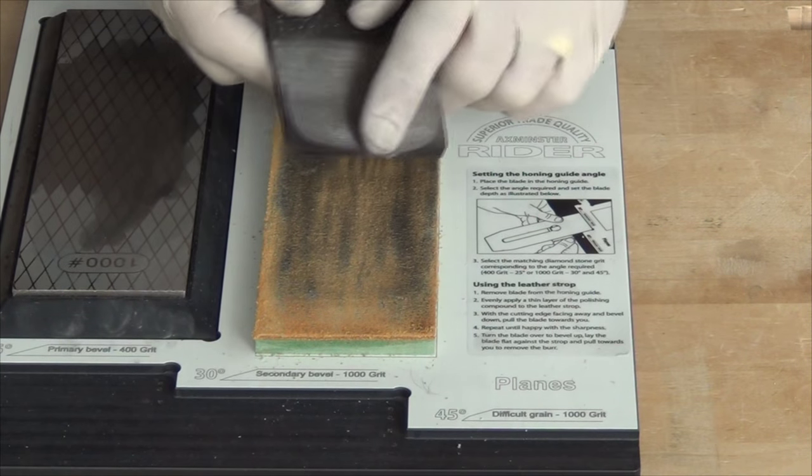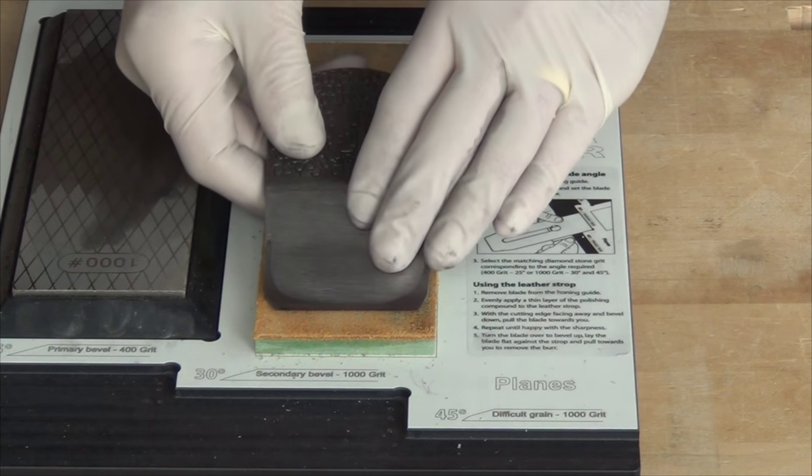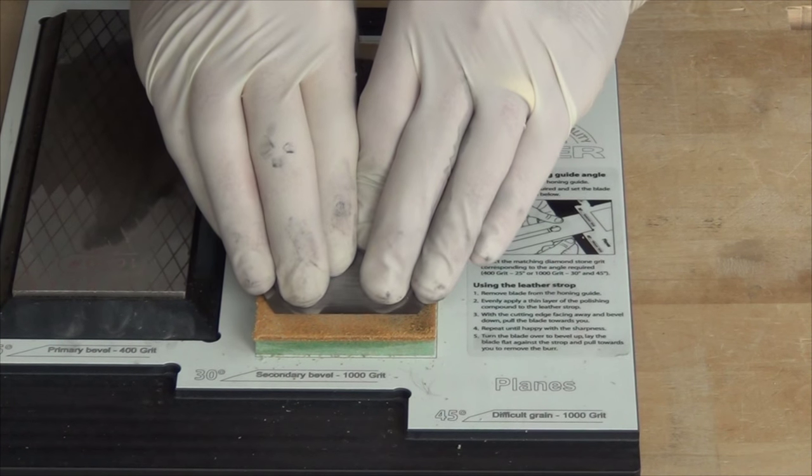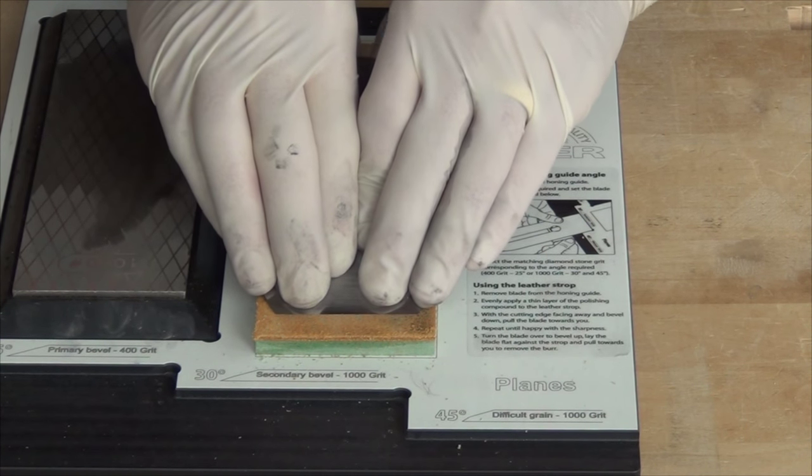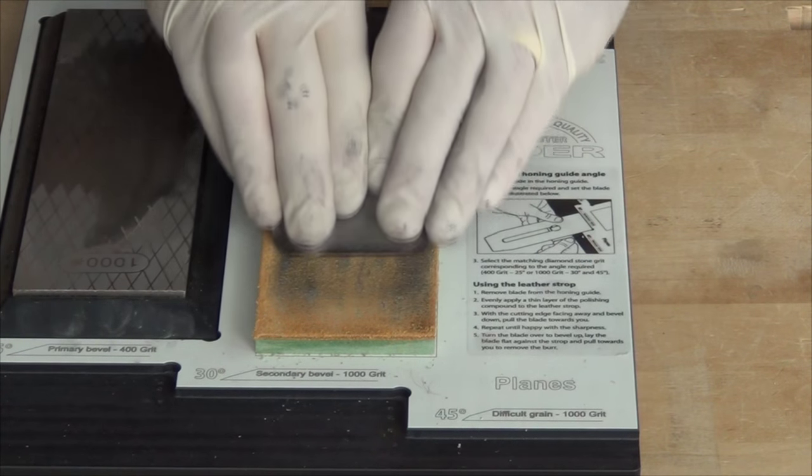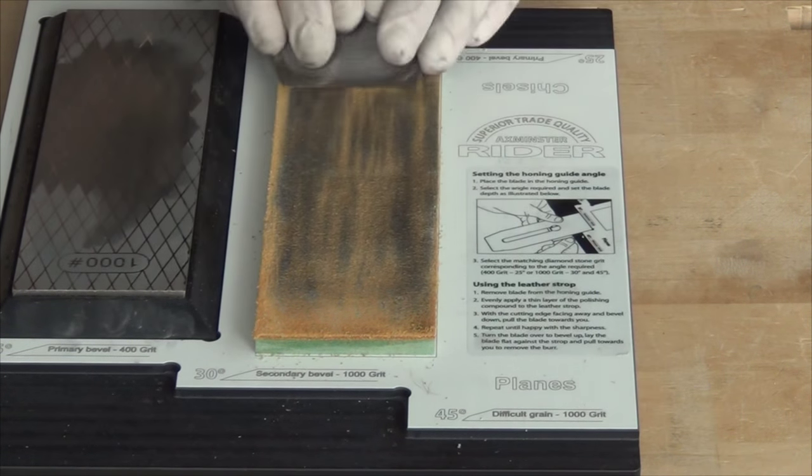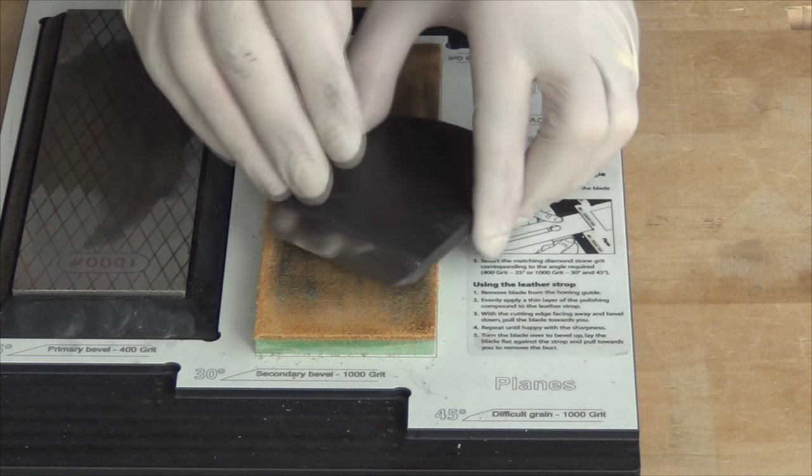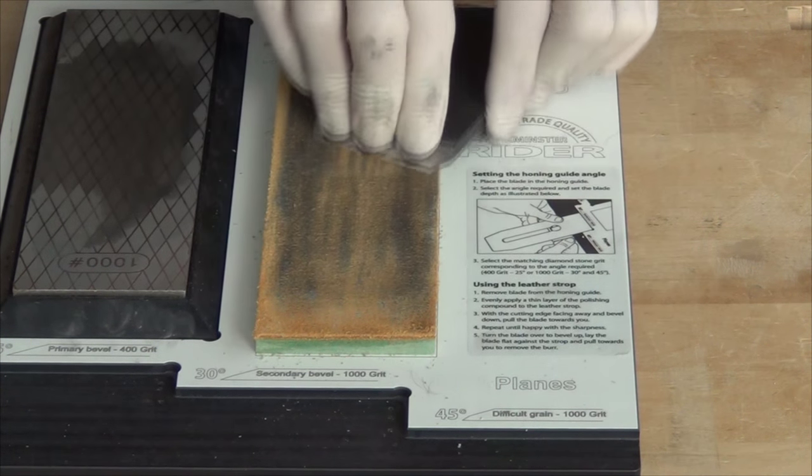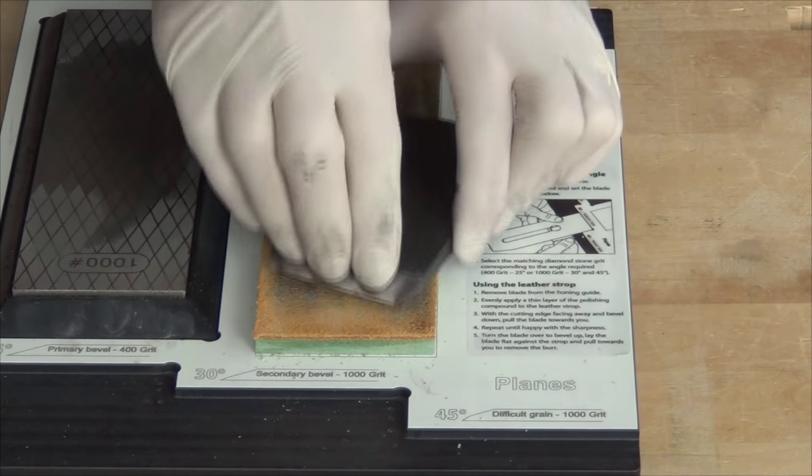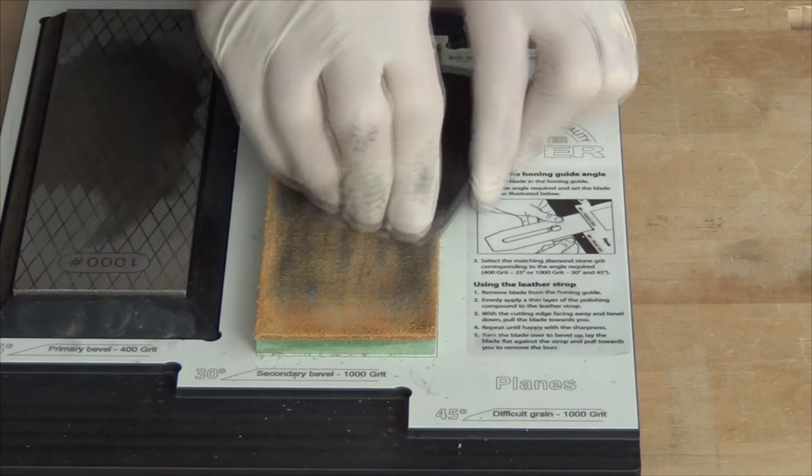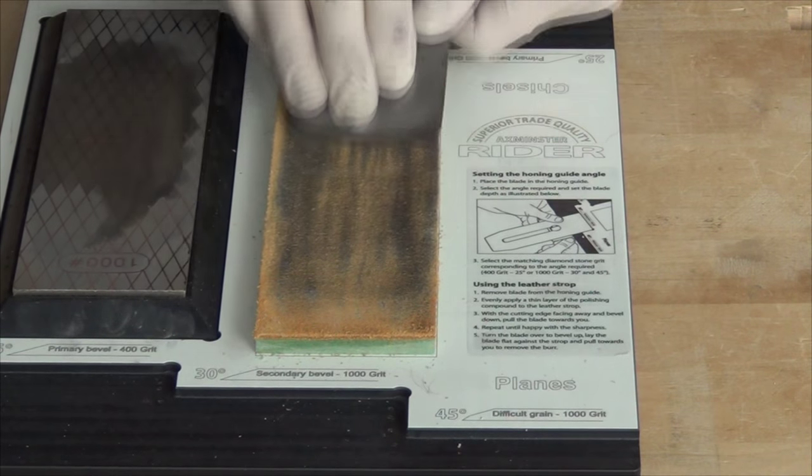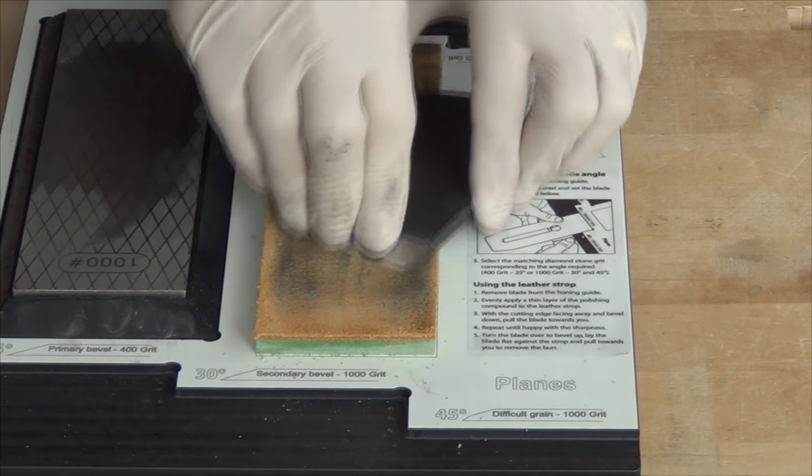Now to strop the edge, I'm going to pull the blade towards me, holding it up very fractionally higher than the bevel angle, so I'm working just on the tip. Turn it over, pull again, take off any slight burr there might be. And flip it and just repeat this process, reducing the number of strops you take on each go.